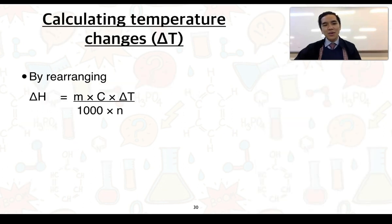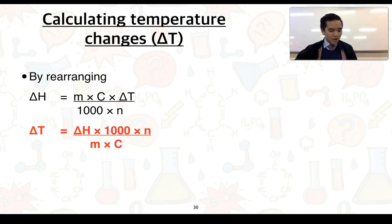For the next part we're going to look at how we can use this formula for the enthalpy change to calculate temperature changes instead. We can simply rearrange the equation so if we do that we get a formula of ΔT being equal to ΔH multiplied by a thousand times n divided by m times c.